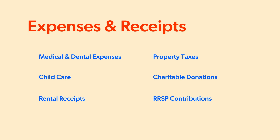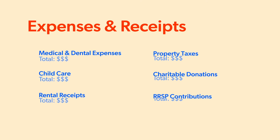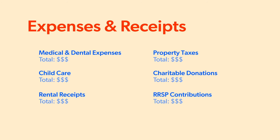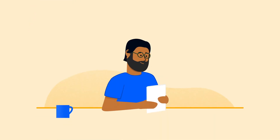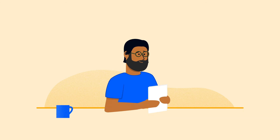Your circumstance is unique and the expenses and receipts you need are too. Here are some other common items to consider, and remember — when in doubt, bring it. To speed up your appointment, it's helpful if you add up your totals for each category. Now that you've got your documents organized for income and expenses, here are additional documents you'll want to have with you.